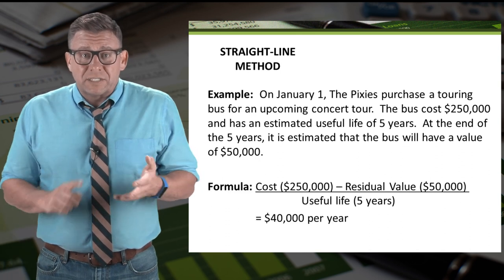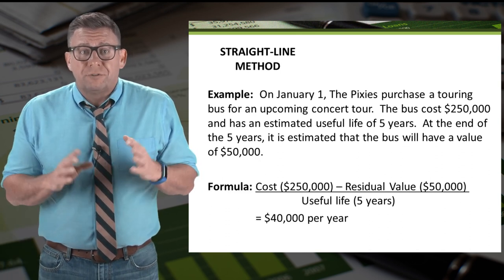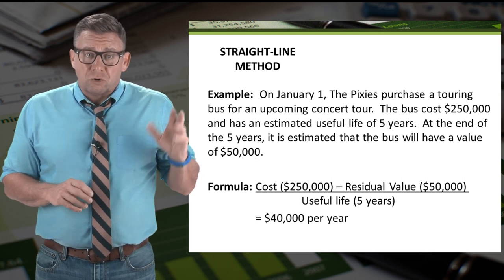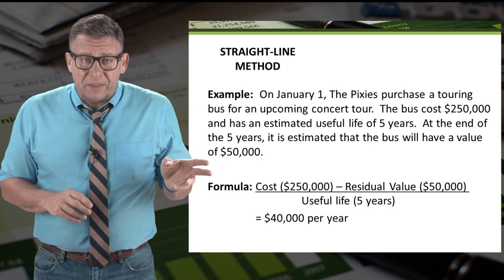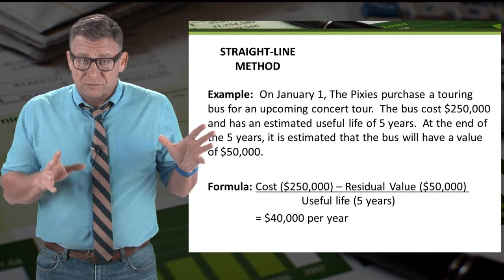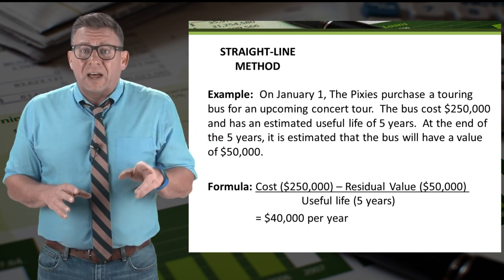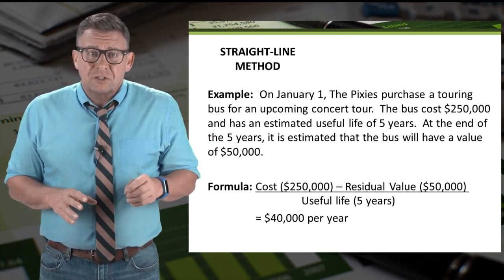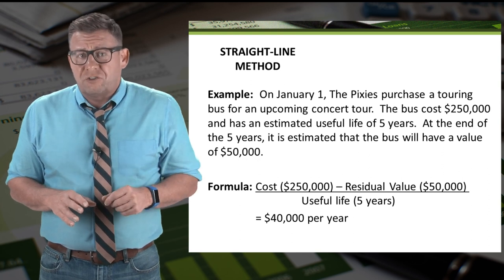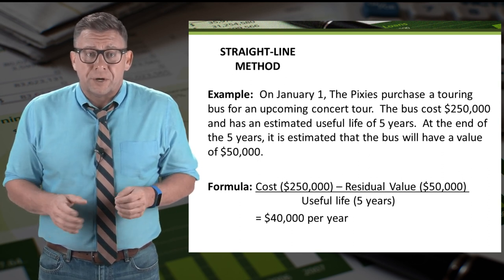The formula is cost minus residual value, divided by useful life in years. So $250,000 minus $50,000 gives us $200,000, then divide that by five years and we get annual depreciation expense of $40,000 per year.